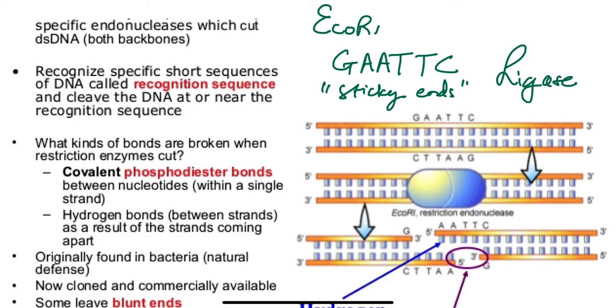Now, originally, this type of enzyme, a restriction enzyme, was found in bacteria. And they seem to use this as a type of natural defense mechanism to cut foreign pieces of DNA.